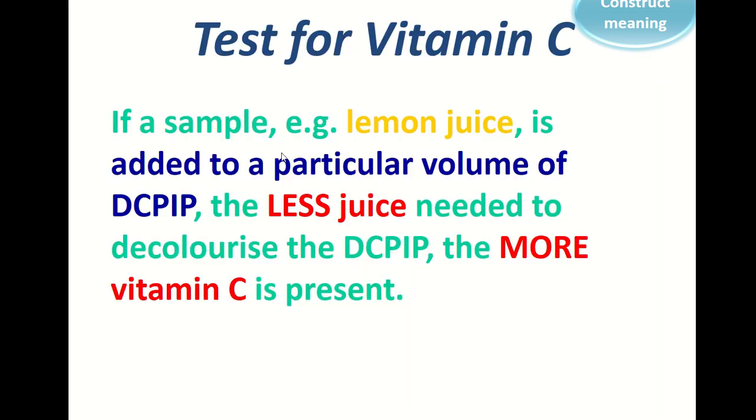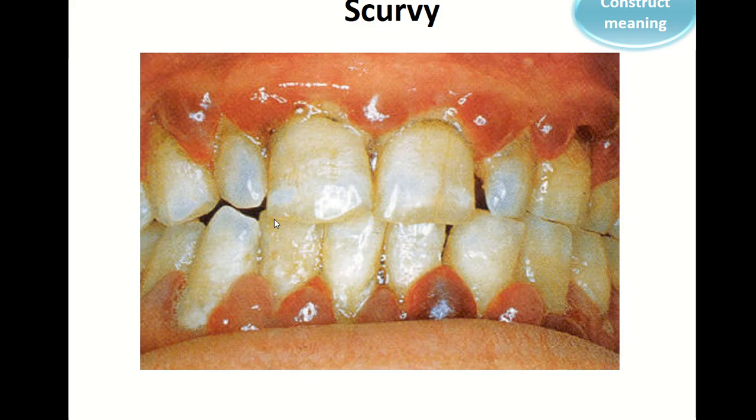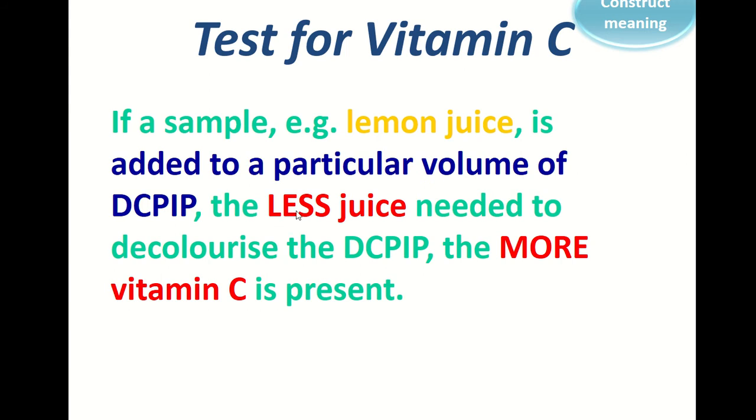And to summarize, if a sample, for example one we didn't do with lemon juice, is added to a particular volume of DCPIP, the less juice needed to decolorize DCPIP, the more vitamin C is present. So in our experiment, the ascorbic acid had the most vitamin C, and that should have been expected because it is pure vitamin C.